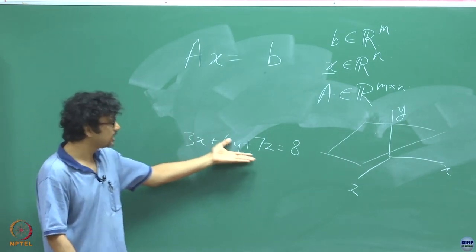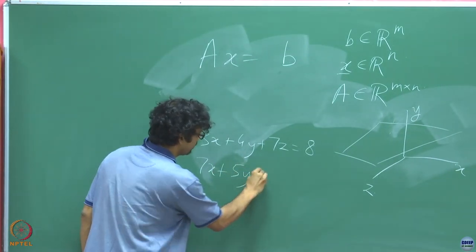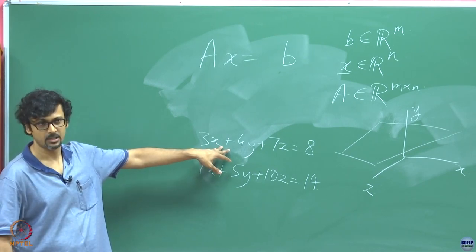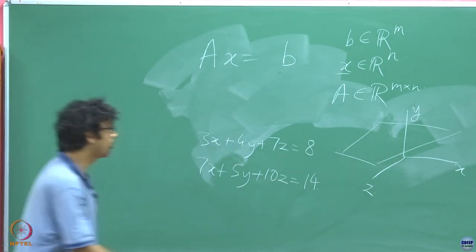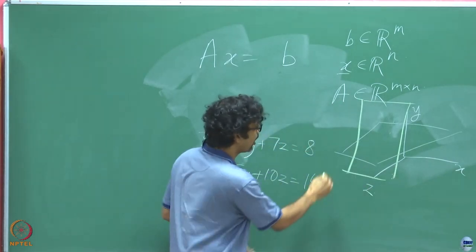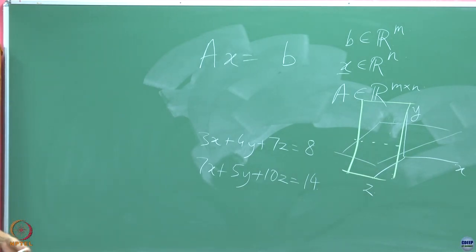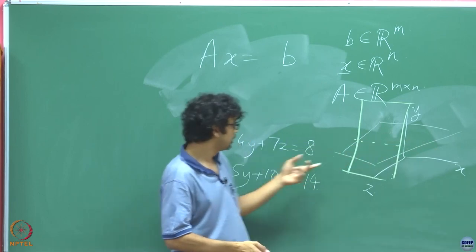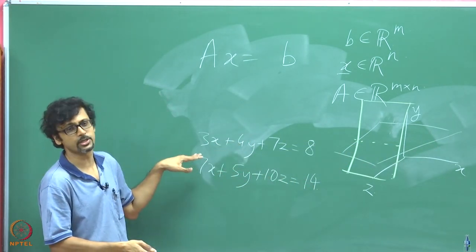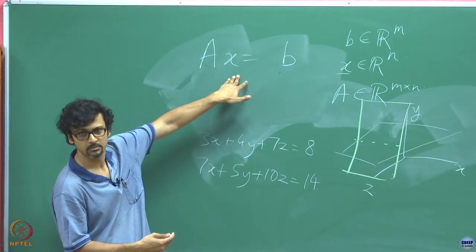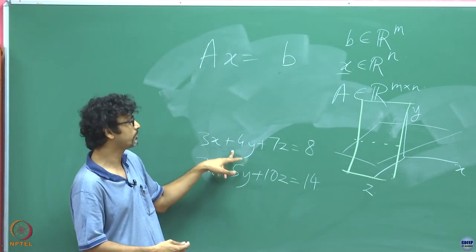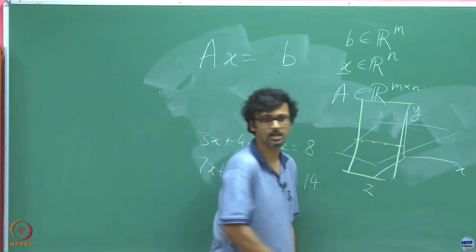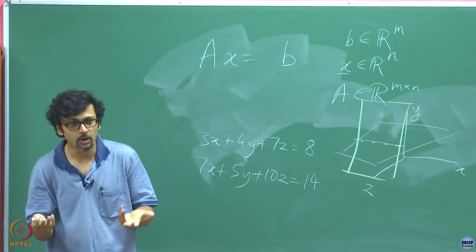Now if I add another plane's equation — say 7x + 5y + 10z = 14 — which is not necessarily parallel to the first, it means we are talking about a second plane that probably intersects the first. When asking for the solution now, the set of solutions has been cut down. Earlier every point on the first plane was feasible, but now your solutions are confined to a line — fewer points, as you might expect.